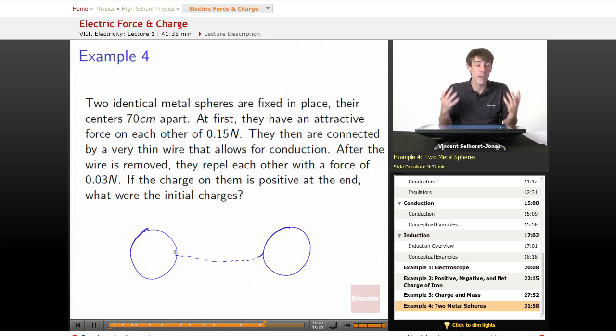Since we've got identical metal spheres, we know that we're going to get identical spreading. So the final charge on each of them, qf, is going to be whatever was on q1 plus whatever was on q2 divided by 2. It's going to be the average of those two charges because it's going to be evenly spread out.